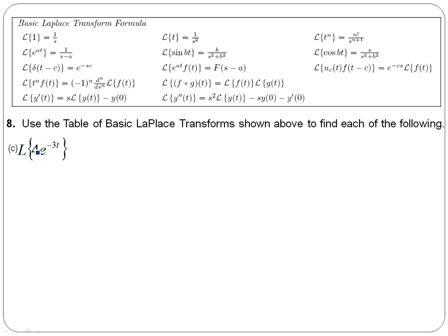In this example, we have e to the negative 3t again, but this time it's multiplied by 4. Remember that because the Laplace is a linear transform, you can bring out that constant 4, and then multiply by the Laplace of e to the negative 3t.